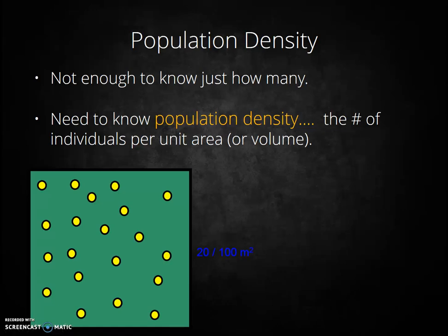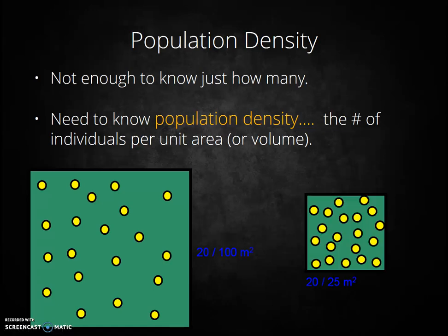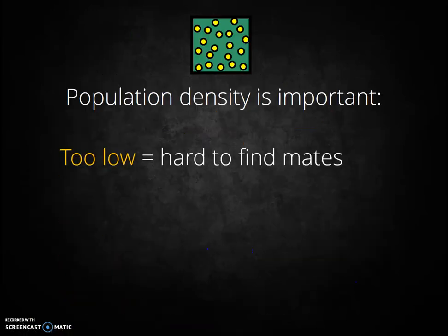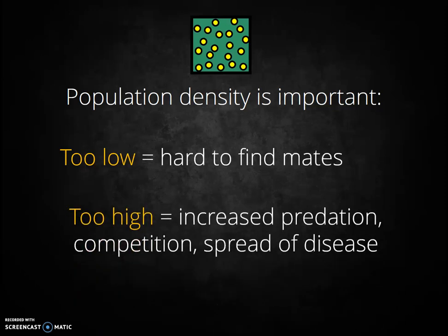The two population densities shown here would have different effects on a particular population. If the population density is too low, individuals may find it hard to find mates, leading to more inbreeding and a less healthy population. If the population density is too high, there may be increased predation, competition, and disease. These three factors are called density-dependent factors because they have an increasing effect on a population as population densities increase.